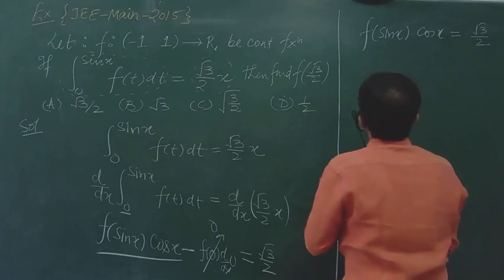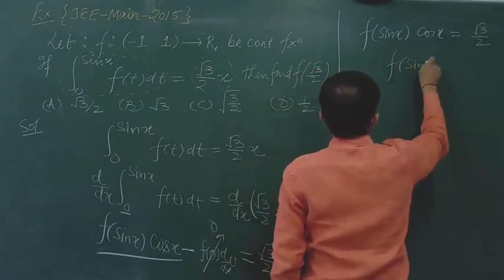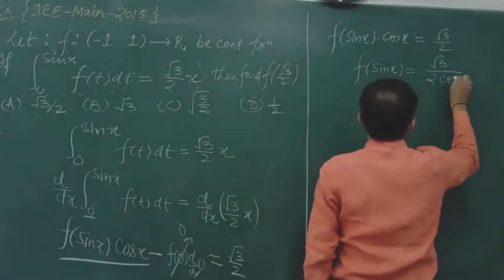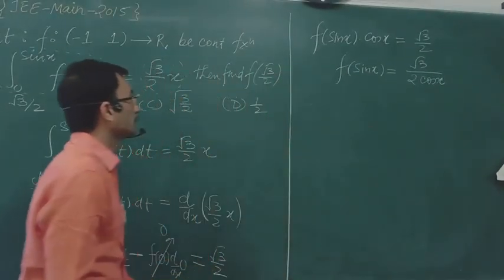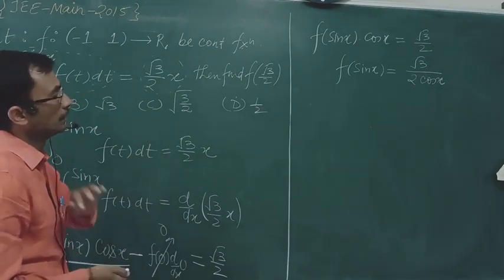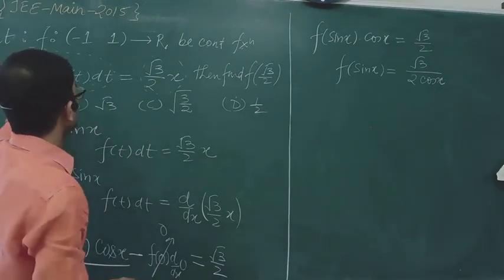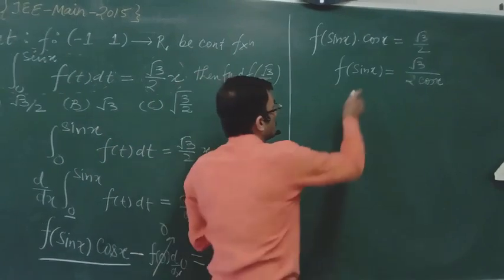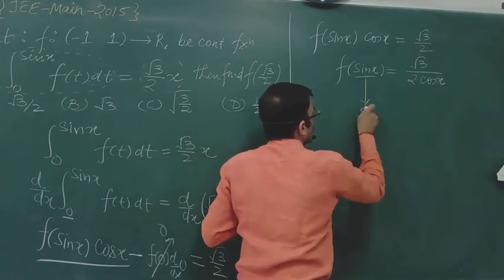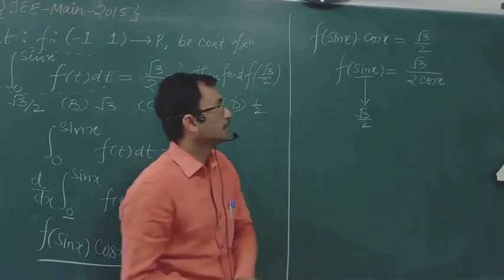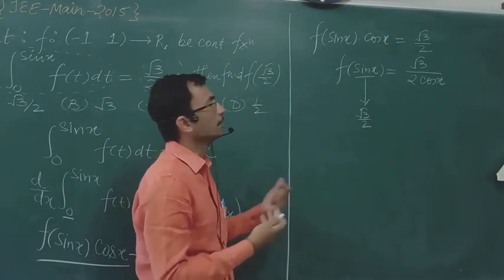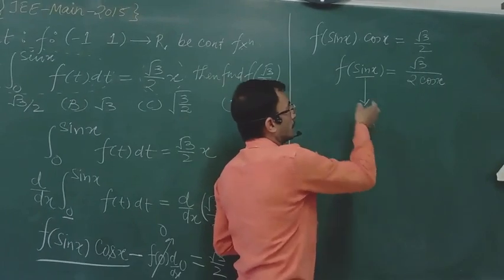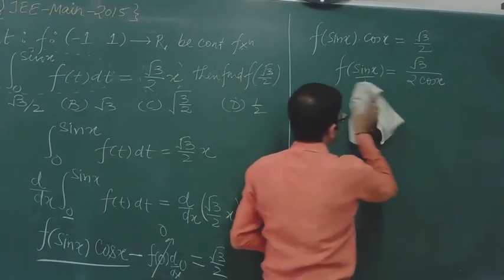So f(sin x) · cos x = √3/2. Now, pay attention — we will re-read the question. We need the limit rule only. We need f(√3/2). So this place, you want to go to root 3/2. You can do this two ways. If you are a very intelligent student, you will guess. But if not, you can still do it. I will show both methods. Let's see the first part.